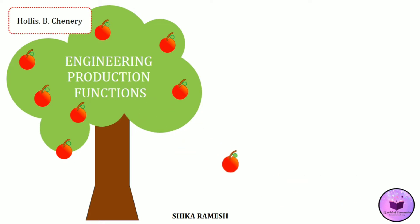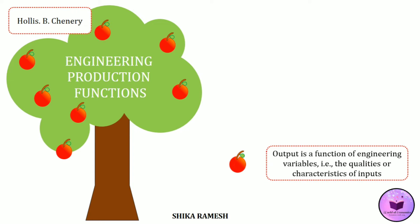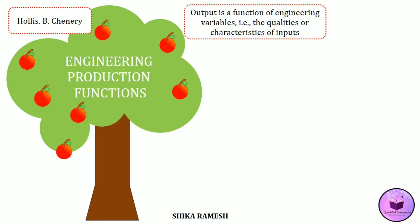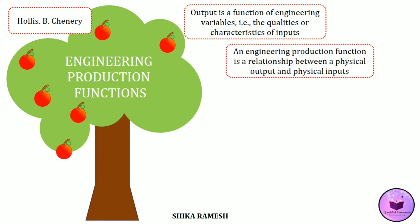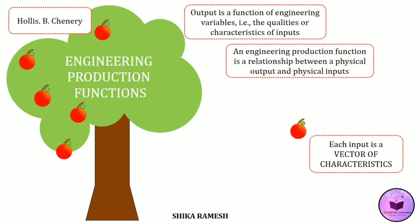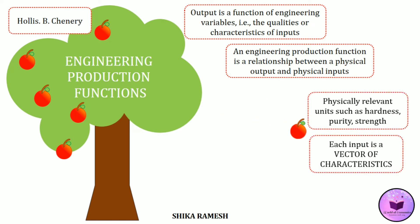Chenery gave importance to the engineering variables used for producing output, and those engineering variables have certain qualities or characteristics such as hardness, purity, strength, quality, etc. Basically what Chenery meant is that an engineering production function is a relationship between a physical input and a physical output, but each input has a vector of characteristics which deals with physically relevant units such as hardness, purity, quality, strength, etc.